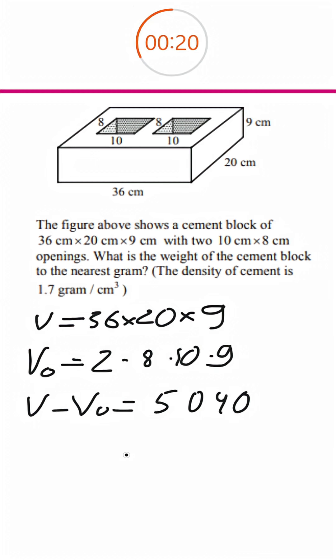But we're not done here because we have to find the weight. To find the weight, we use weight equals density times volume. And that's going to be 5040 times 1.7.